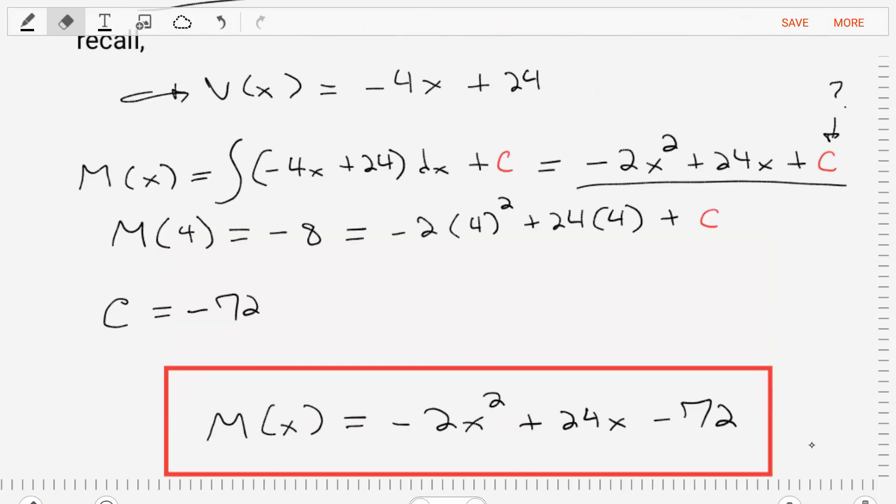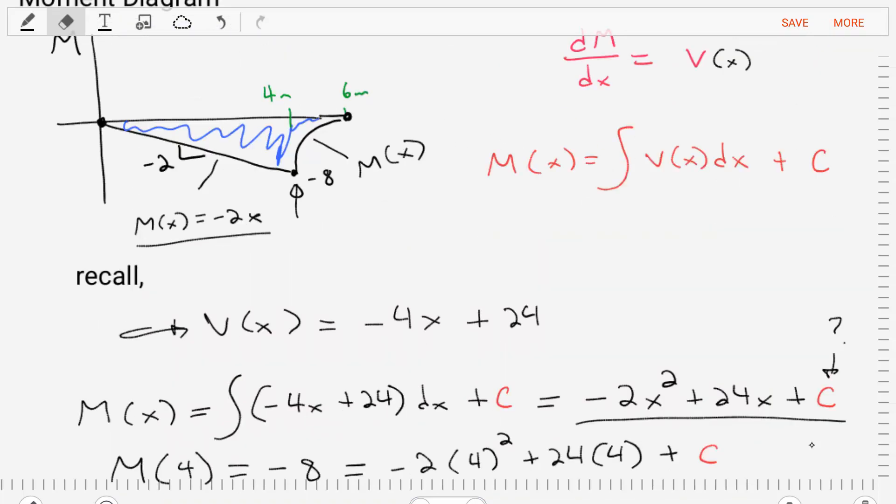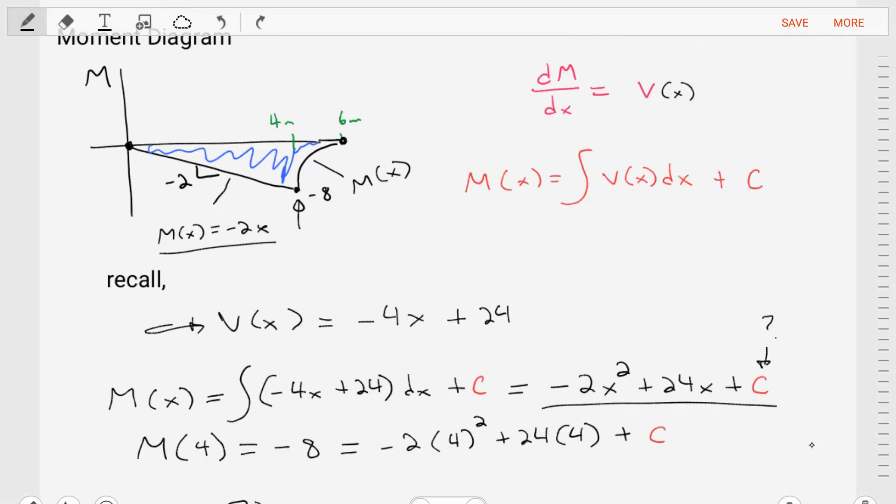All right, and then we would go and plot that using our calculators to create this nonlinear portion here. And we'll find that we started at zero and we end at zero, indicating that the equation we found, the process that we used is accurate. It seems like we've got a good diagram.